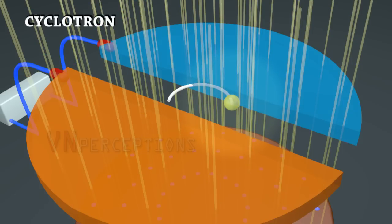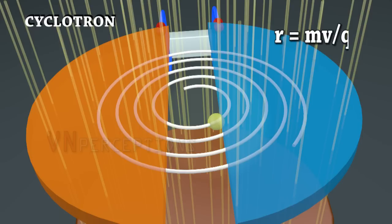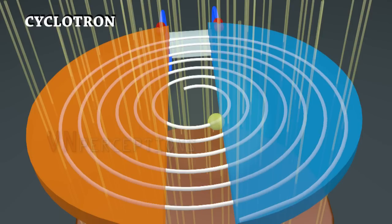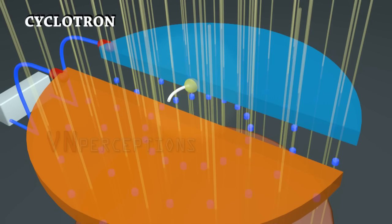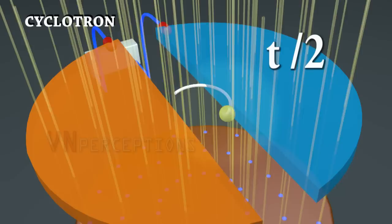It experiences a force in a direction perpendicular to the plane containing V and B. This force provides the centripetal force and makes the charged particle move along a circular path of radius R equals MV upon Q times B. The particle makes a semicircle and comes to the gap. The time taken is T by 2.